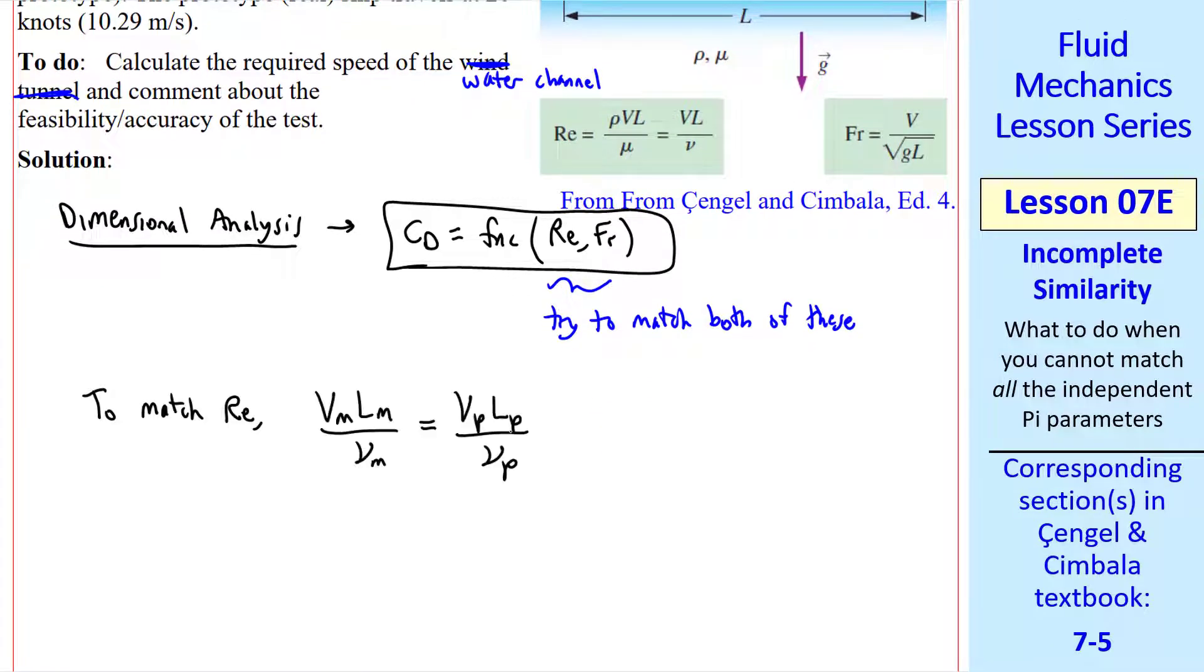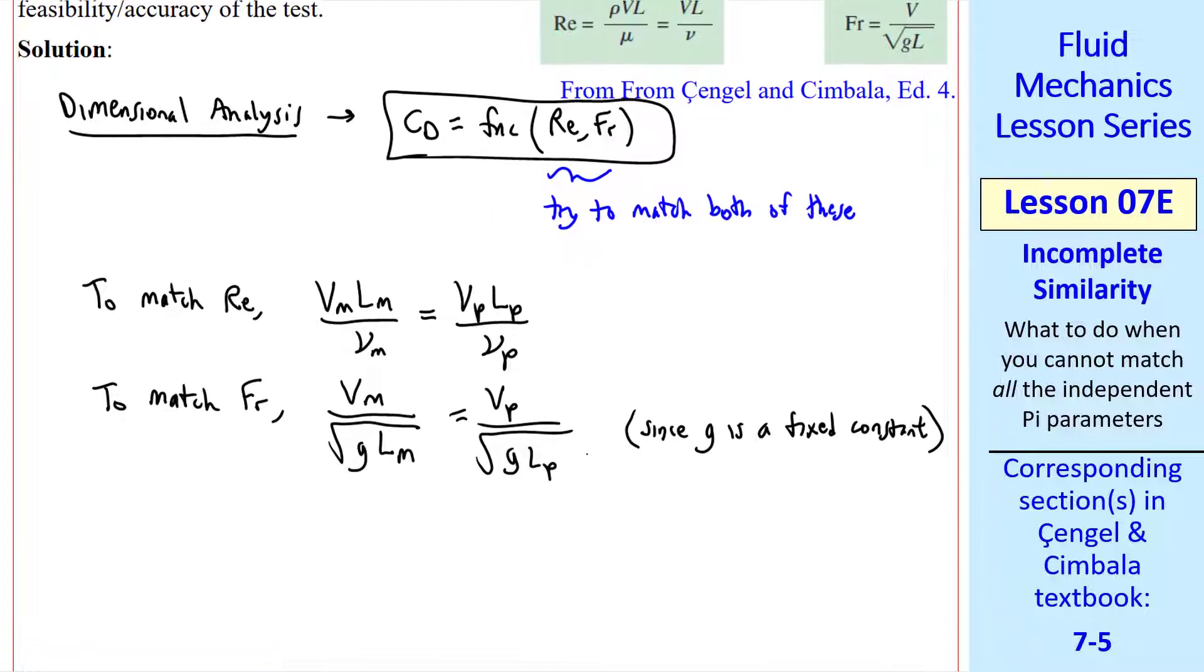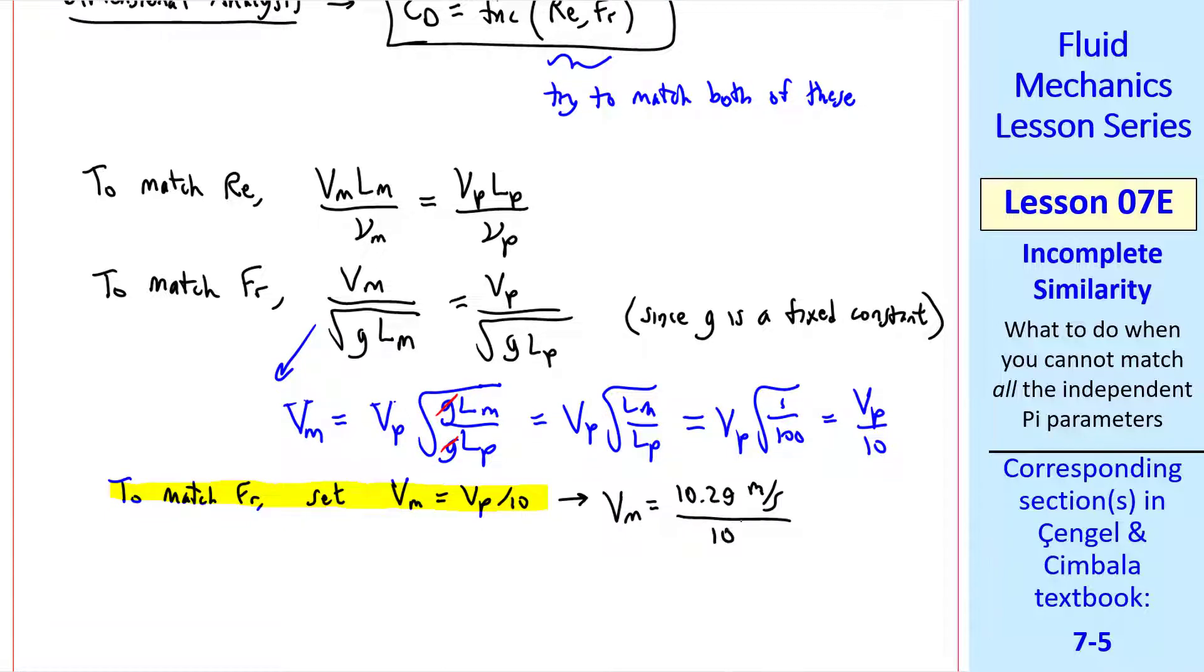Let's try to match both of these independent pis to achieve complete similarity. To match Reynolds number, we write v_m*l_m/nu_m = v_p*l_p/nu_p. And to match Froude number, we match v_m/sqrt(g*l_m) to v_p/sqrt(g*l_p). Since g is the same in both cases, it's a fixed constant unless we're doing the experiment on some other planet. Let's start with Froude number. We solve for v_m: v_m = v_p*sqrt(l_m/l_p). Since we have a 100th scale model, we get v_p/10. So to match Froude number, we have to set v_m = v_p/10. Well, that's certainly feasible with a model in a water channel. Here, v_m would be 10.29 meters per second divided by 10, or about 1.03 meters per second, which is well within the range of water channels.